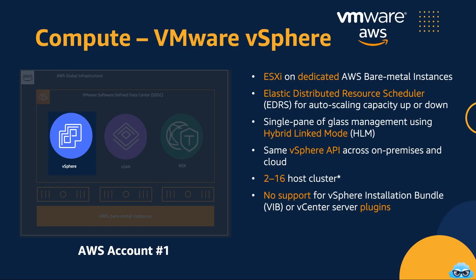Let's delve deeper into the compute layer of VMware Cloud on AWS. Dedicated bare metal AWS servers are deployed in specific AWS regions, providing the raw computing power on which VMware Cloud on AWS is built. VMware's robust vSphere ESXi hypervisor is installed on these hosts — it's the virtualization engine that empowers your workloads. These hosts come together to form a vSphere cluster, creating a cohesive environment for running your virtual machines. A vCenter Server runs in the cloud, orchestrating and managing your virtualized infrastructure, providing a centralized control point.